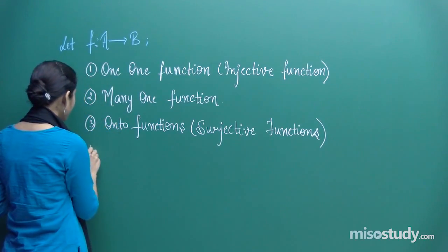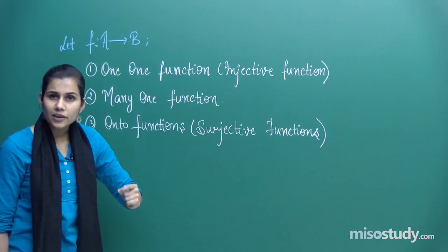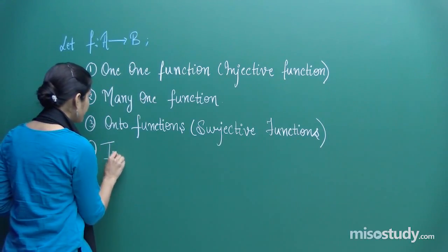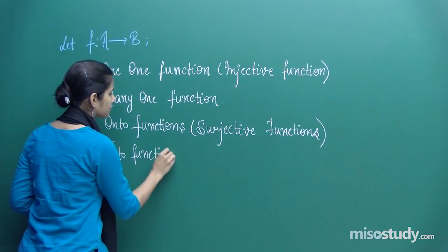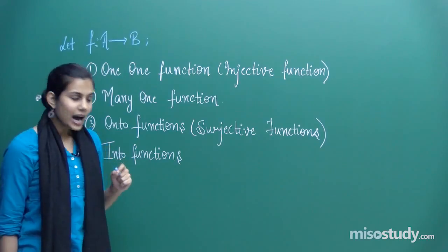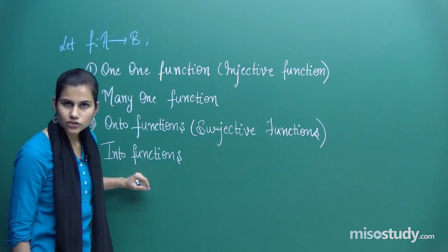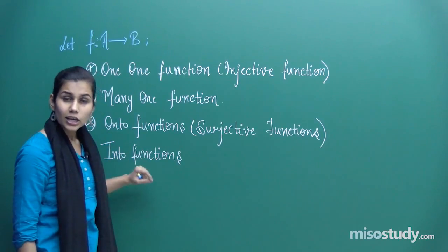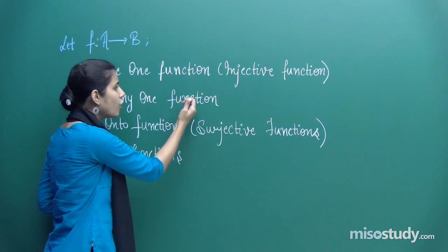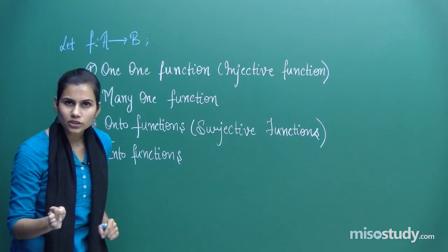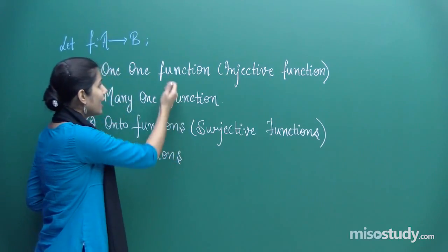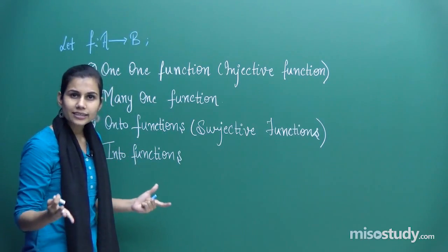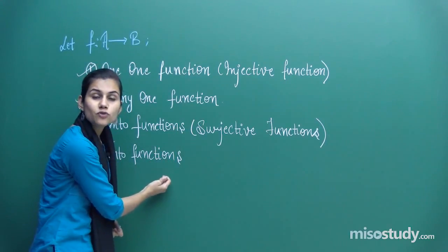The last category speaks about another behavior of the members sitting in set B, the co-domain. Based on that behavior, we classify them as into functions. Just like every function is either one-one or many-one, every function is either onto or into. An onto function can never be into, and an into function can never be onto.